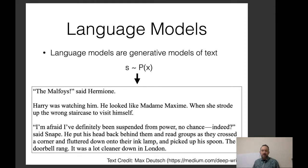We can create very large language models that can generate very plausible text, like GPT-2, GPT-3, Turing-NLG, et cetera.